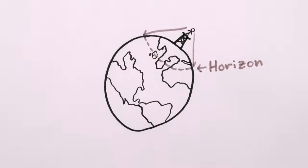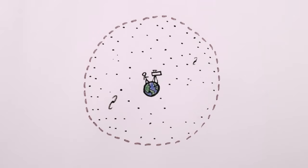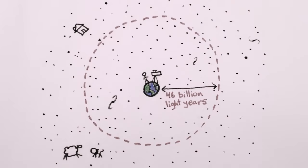But just because you can't see beyond the horizon doesn't mean there's nothing there. And so it is with the observable universe. Looking up at the sky, we see light that's at most 13.8 billion years old and coming from stuff that's now 46 billion light years away. Anything farther is beyond the horizon.